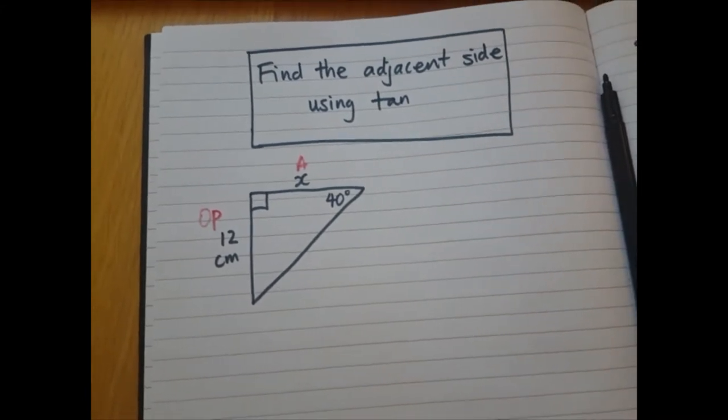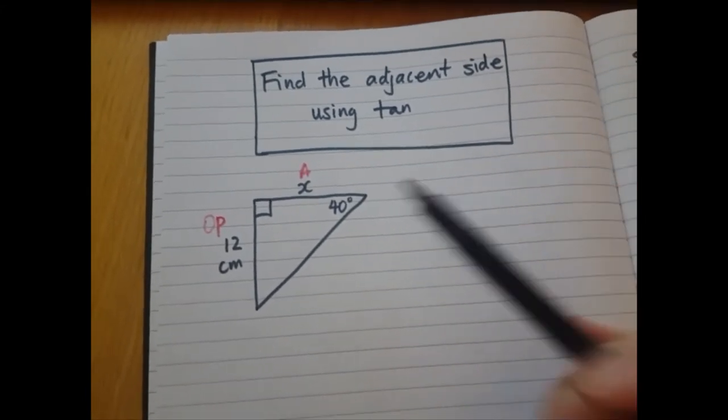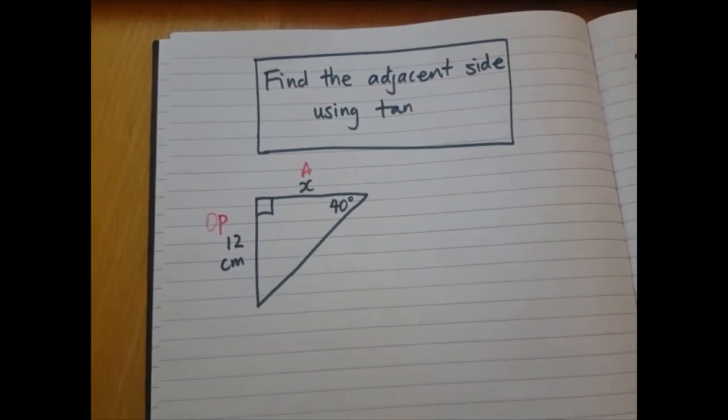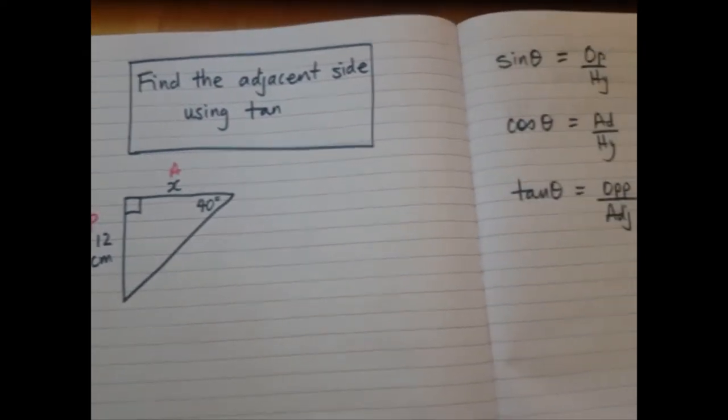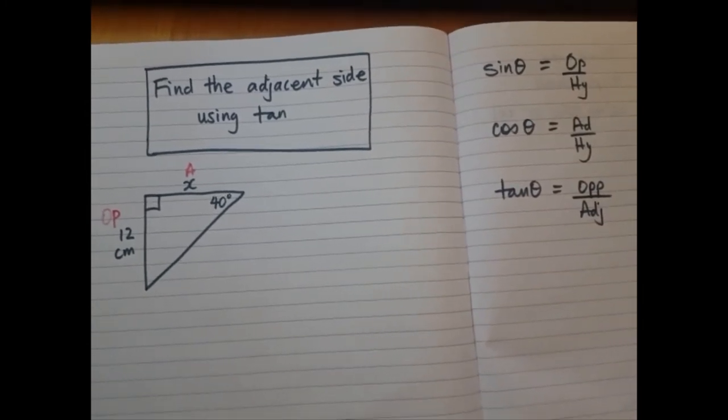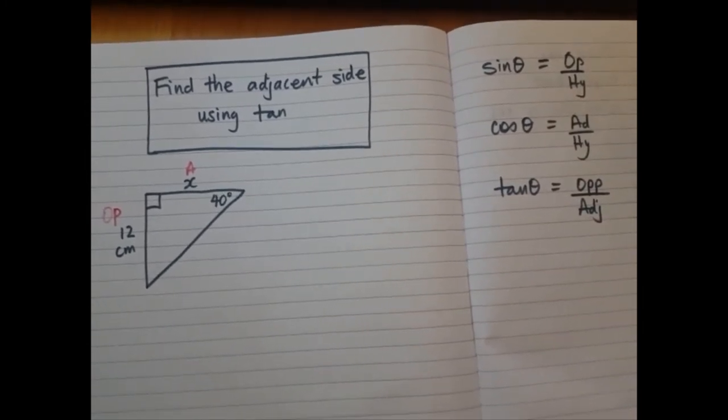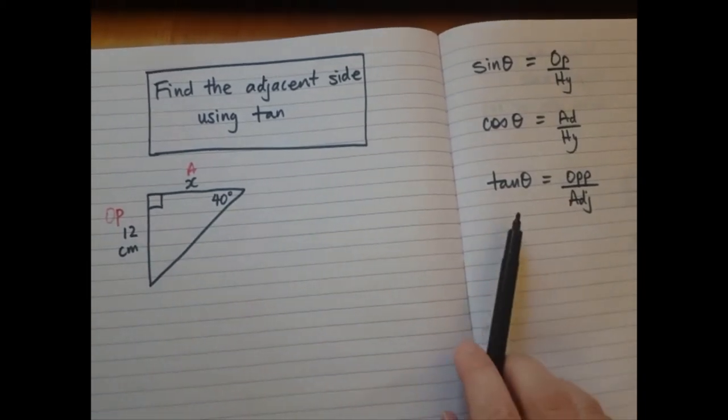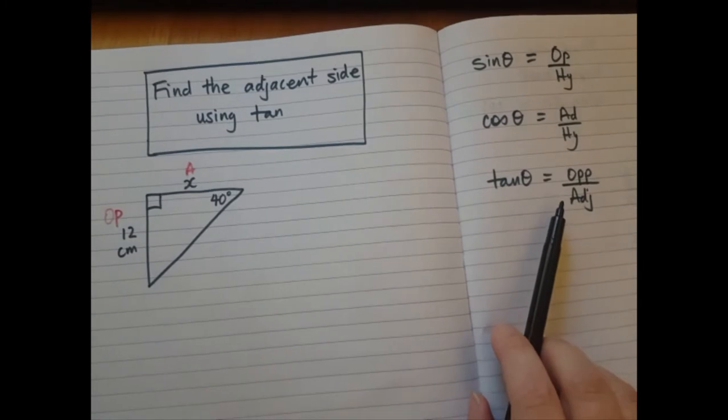So the formula we want has to have adjacent and opposite, and if we go back to the three formulas we looked at, there is only one of them which has adjacent and opposite, and it's this one, tan theta. See here, opposite and adjacent.